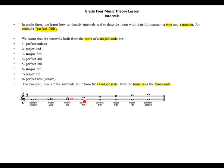From G to C it's 1, 2, 3, 4 — perfect fourth. From G to D it's 1, 2, 3, 4, 5 — perfect fifth. Major sixth is 1 on the line, 2 space, 3 line, 4 space, 5 line, 6 space — major sixth.